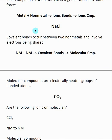The other type of bond we will spend quite a bit of time talking about are called covalent bonds. This is where the two elements inside the compound are bonded together by sharing electrons, and this tends to occur when we're dealing with two nonmetals. Nonmetals are in the upper right-hand corner of the periodic table. When we see two nonmetals bonded together, the electrons are being shared in a covalent bond. These tend to form molecular compounds — ionic compounds have ionic bonds, molecular compounds have covalent bonds.